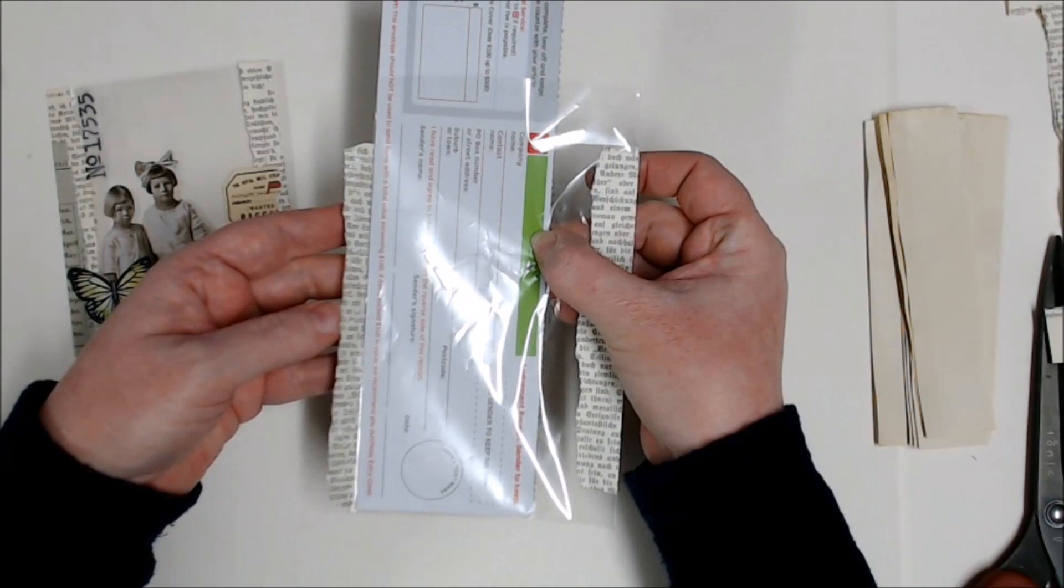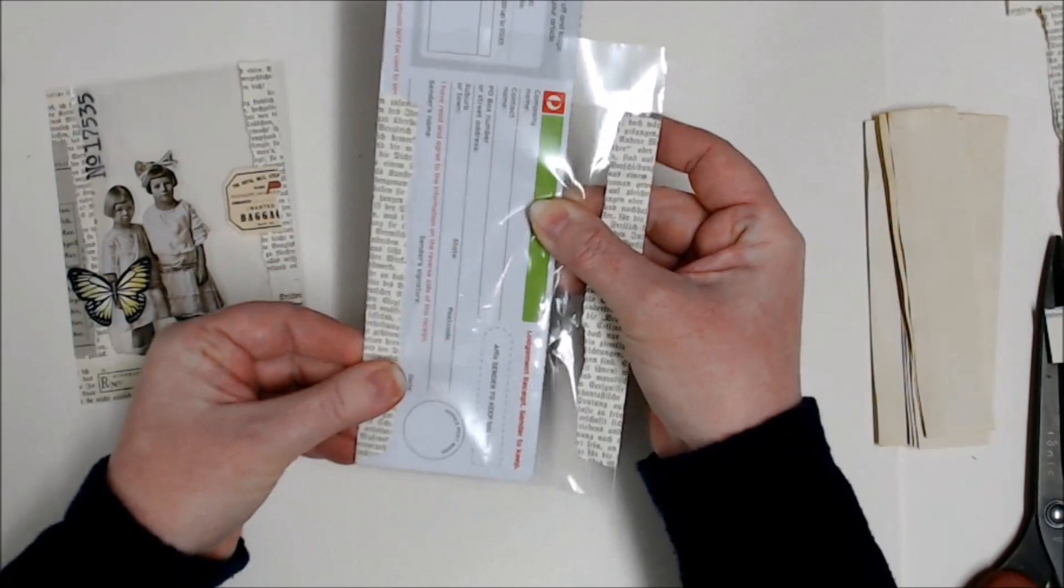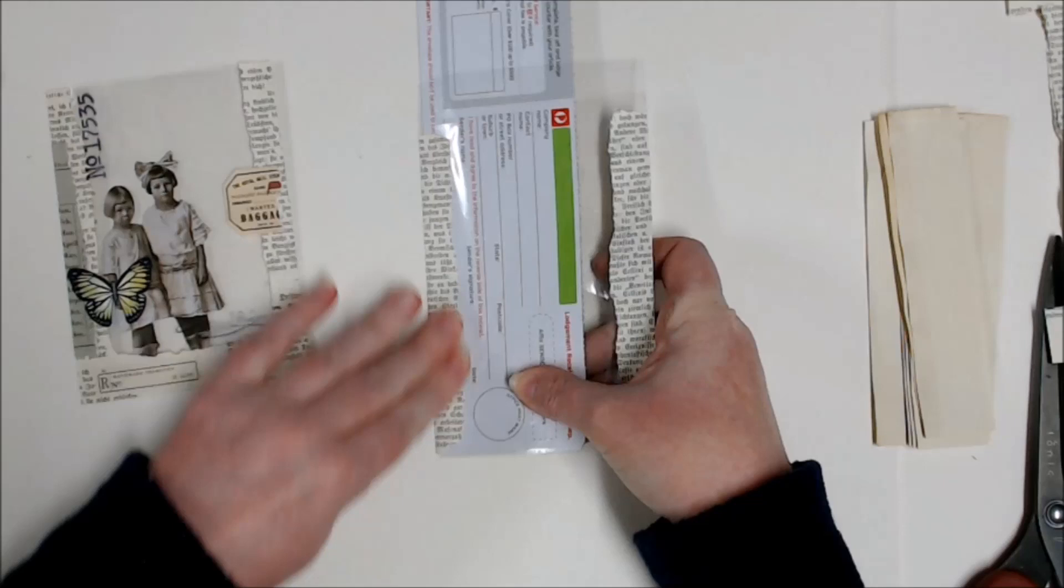So that way when I pop my glue down, I could sort of push quite firmly up against that cardboard and it gives me a nice firm base to press that crease into.